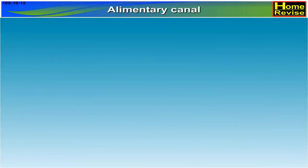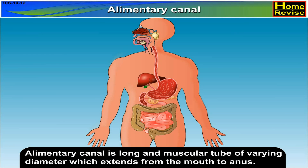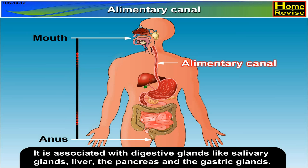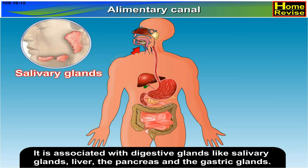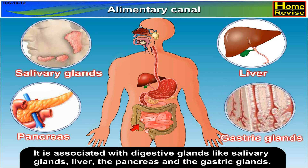The alimentary canal is a long and muscular tube of varying diameter which extends from the mouth to the anus. It is associated with digestive glands like salivary glands, liver, the pancreas, and the gastric glands.